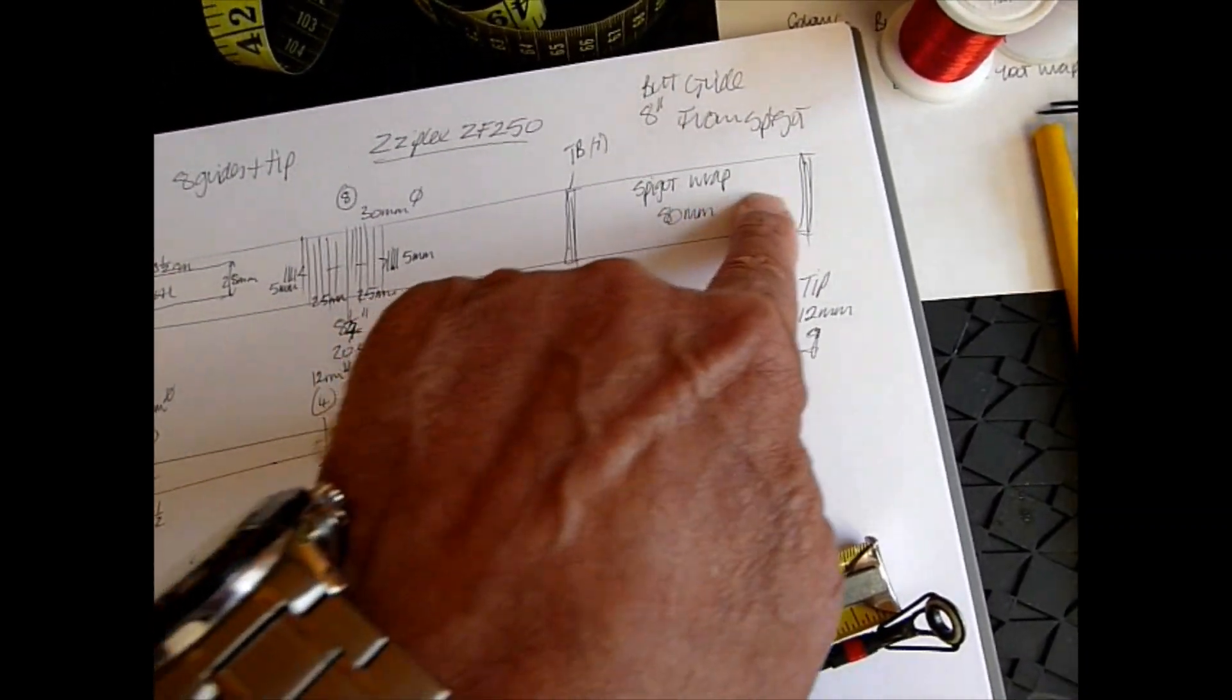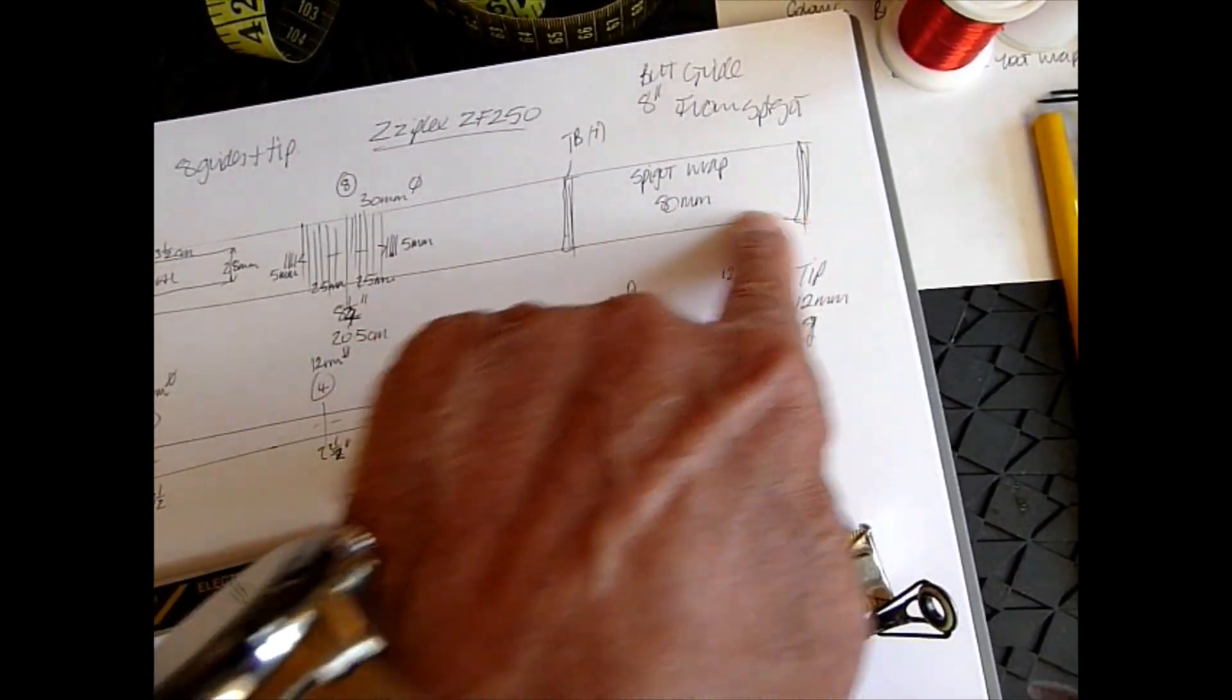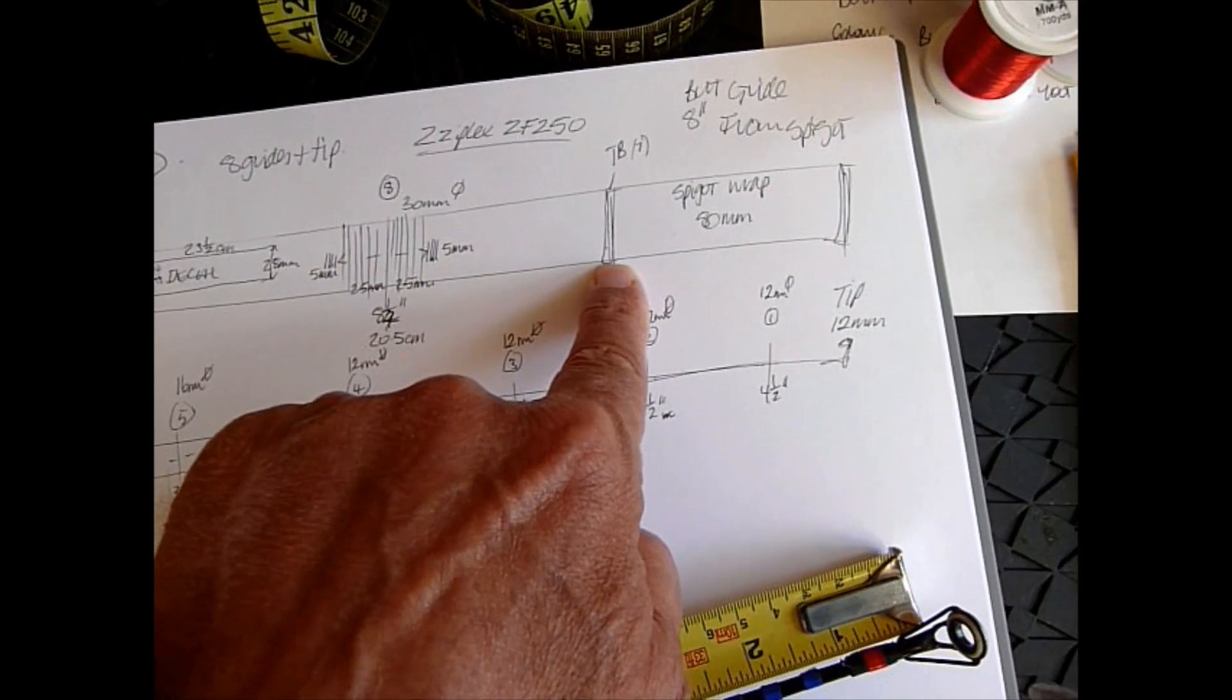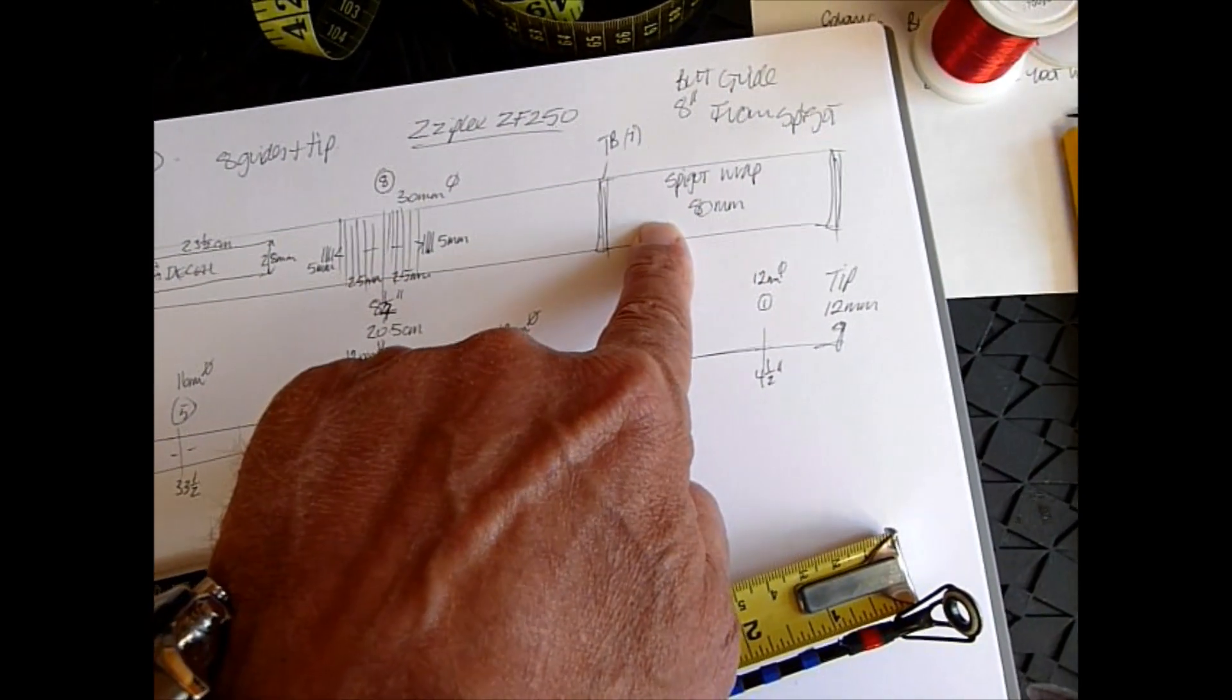You've also got a spigot wrap on the butt section. It's eighty millimeters in length, there's a trim band of about two mil, seven turns on the rod. Make sure you put that in as well.